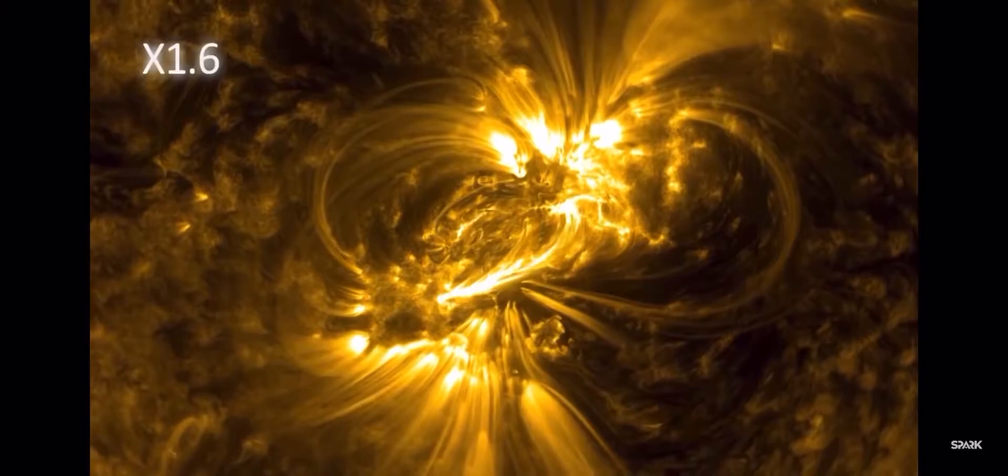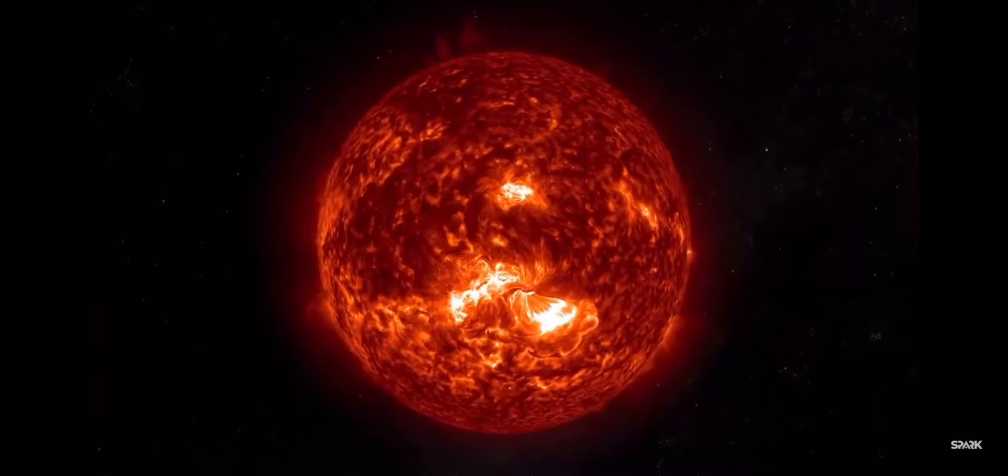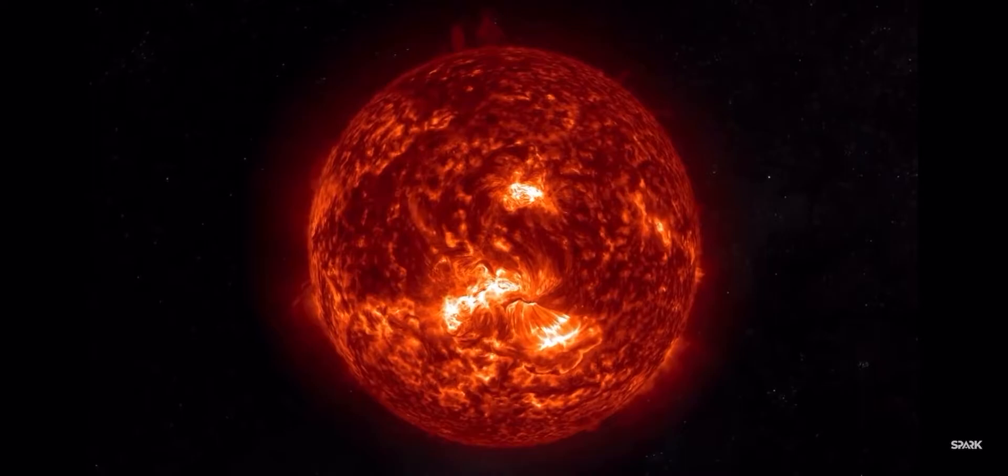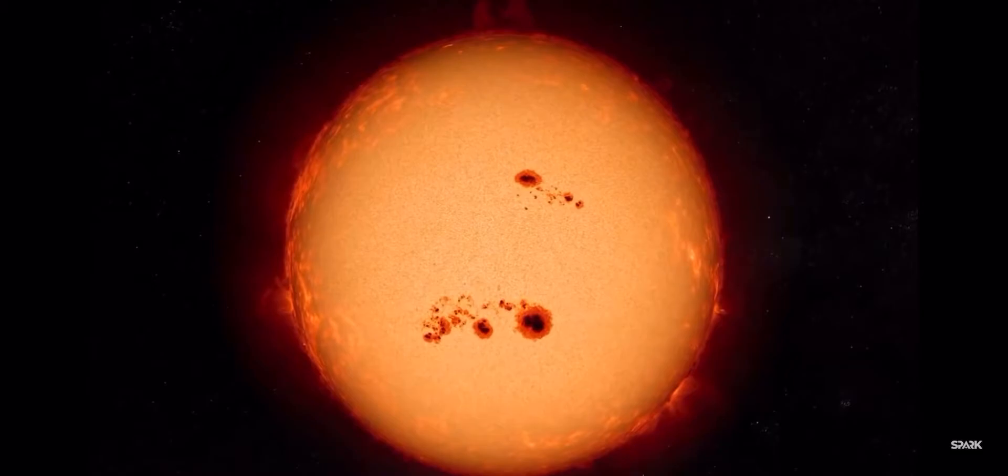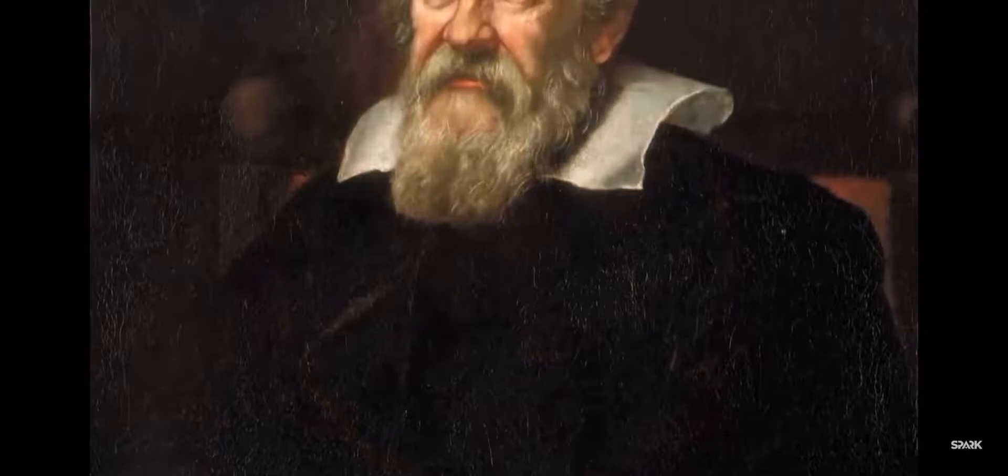But the magnetic fields that spur this energy release can also stifle it. As a result, active regions are often flanked by sunspots, where surface temperatures can drop by as much as 2,000 degrees Celsius.